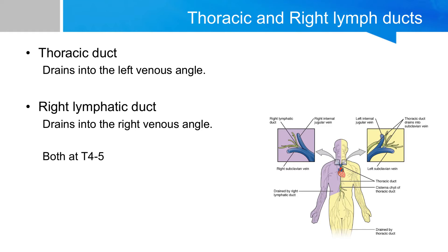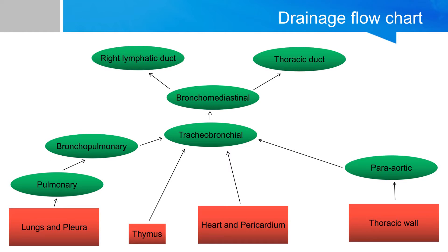These both drainages happen around the region of the fourth or fifth thoracic vertebrae. Now, I prepared a very easy-to-memorize drainage flowchart for the viscera and structures in the thoracic region. In red you can see the organs and structures, and in green you see the lymph nodes and the lymph ducts.